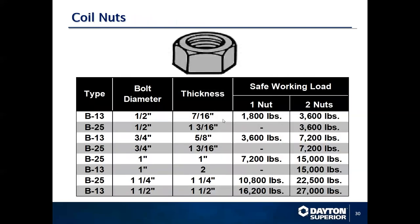Coil nuts: we have two different varieties. The B13 is a standard coil nut. The B25 is equivalent to two B13s — a heavy duty coil nut. You do get a stronger capacity with the B25, and a lot of times it is required to achieve the maximum load capacity of the coil rod.